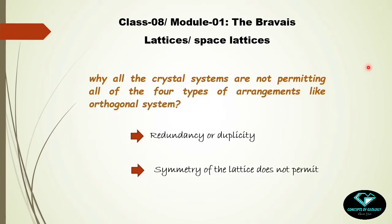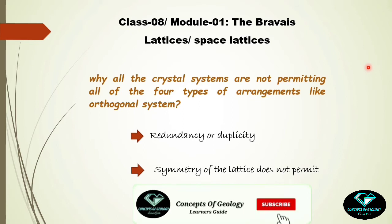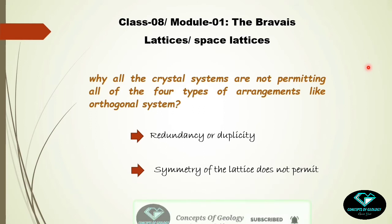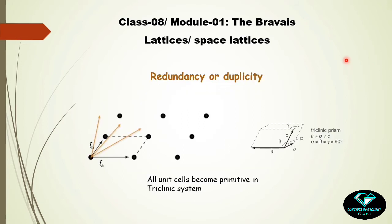The main question is: why do those gaps exist in the table — why don't all crystal systems permit all four types of arrangements, like the orthorhombic system does? There are two reasons. First is redundancy or duplicity: in some cases a particular lattice arrangement becomes duplicated with another, so one must be discarded. Second, sometimes the symmetry of the lattice does not permit all four arrangements. We will discuss both with illustrations.